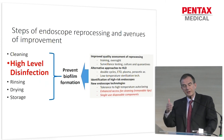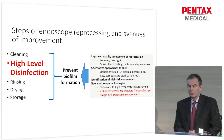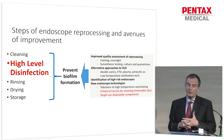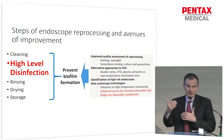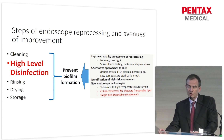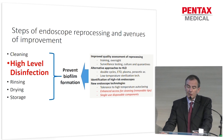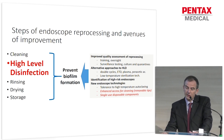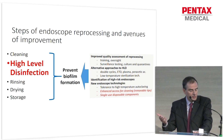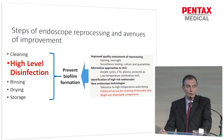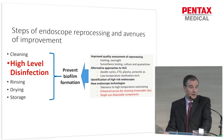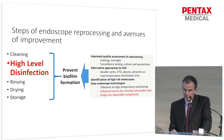There are different steps of endoscope reprocessing which aim at preventing biofilm formation, and different avenues of improvement have been identified. These include improvement of quality assessment of reprocessing, alternative approaches to high-level disinfection, the identification of high-risk endoscopes like duodenoscopes, and new endoscope technologies — including enhanced access for cleaning with removable tips and single-use disposable components.